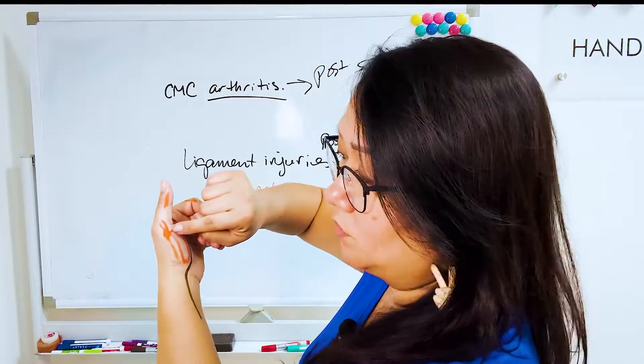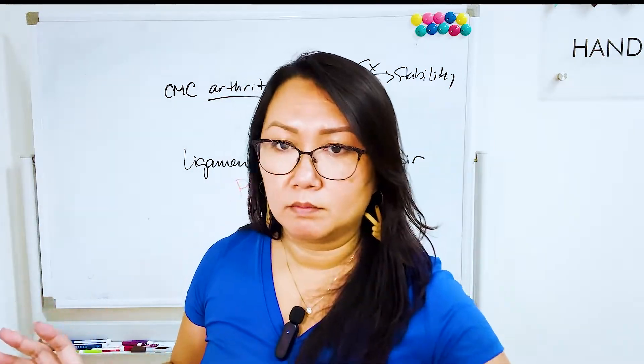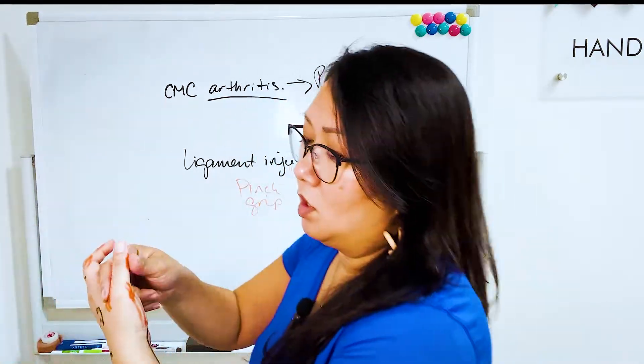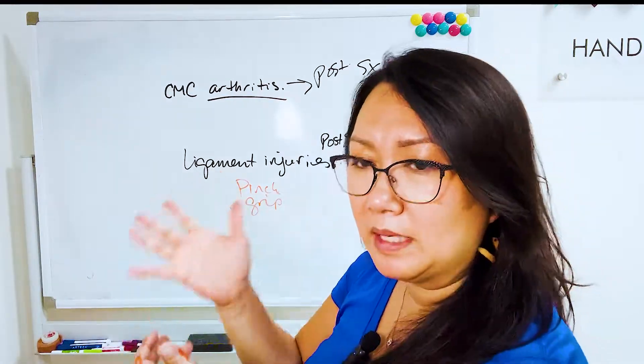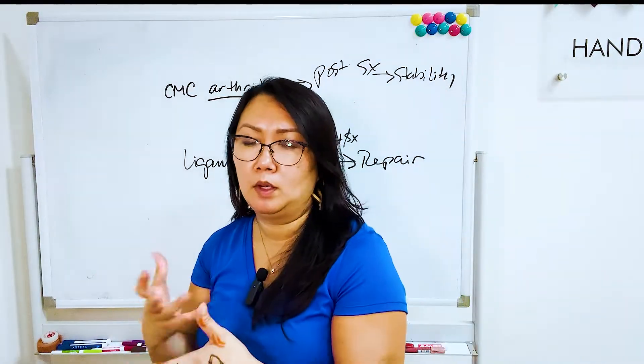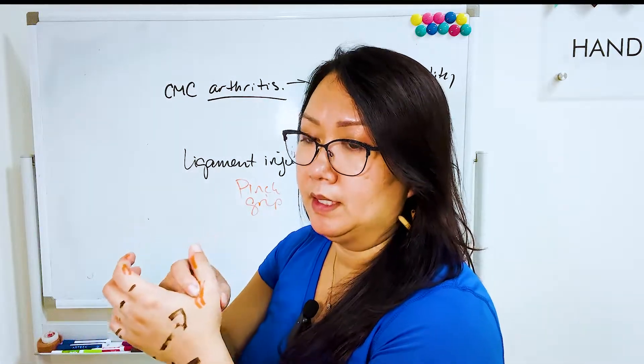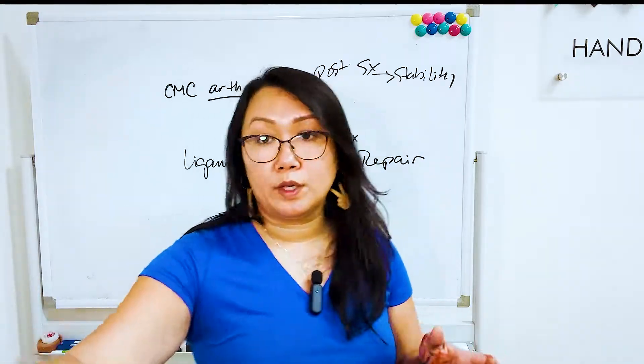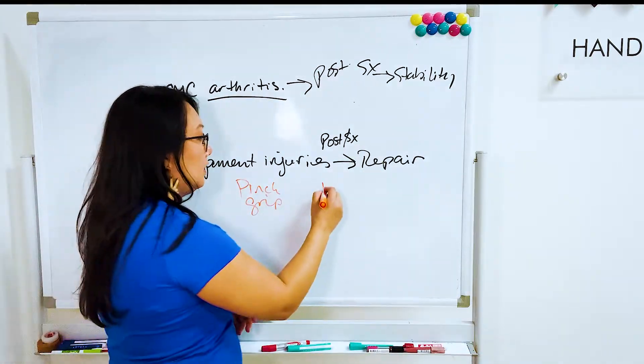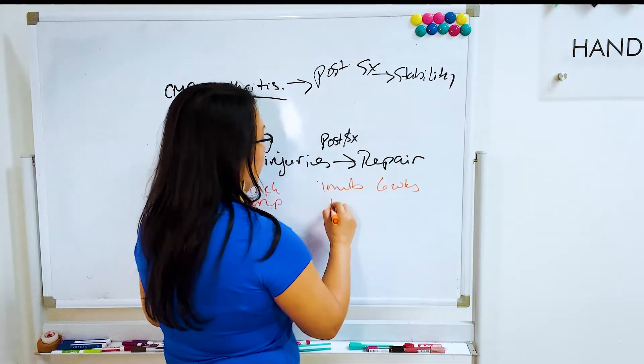So the collateral ligaments on the radial side, they're just stronger by nature. They're stronger. So, and most injuries don't push that way. Every once in a while you might see that. It might be in a car accident. It might be whatever. But usually the ligament injury is they'll immobilize it. They'll immobilize it for six weeks or so. Immobilize six weeks in a thumb spica.